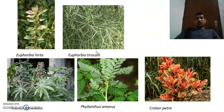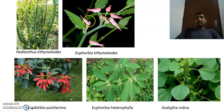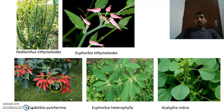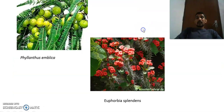Another example is Pedilanthus, called Pedilanthus tithymaloides. You can see its flower and inflorescence resembling a parrot. Then there is Euphorbia pulcherrima, used as an ornamental plant due to its attractive colored parts. Also Euphorbia heterophylla, Acalypha indica, and Acalypha hispida.